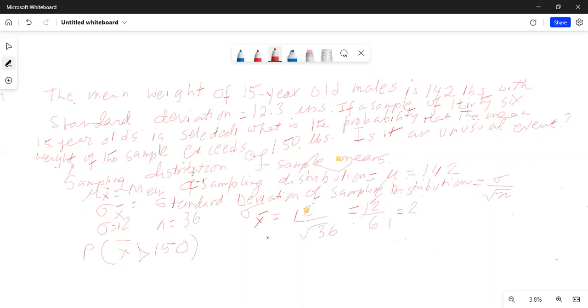We want to find out what is the area under the standard normal curve or under the normal curve to the right of 150. So if we can draw quickly a sampling distribution with the mean at 142, that's your mu x bar and sigma x bar is 2.